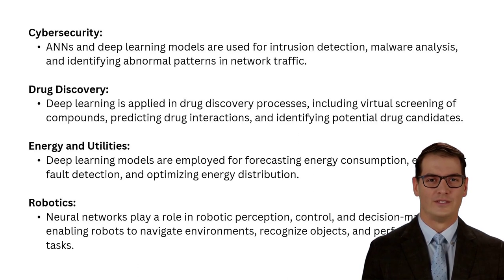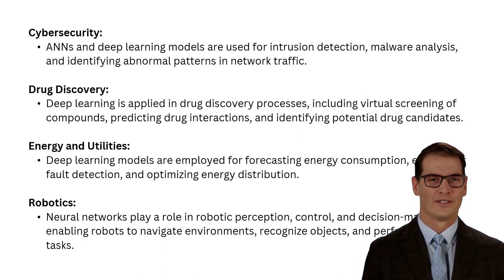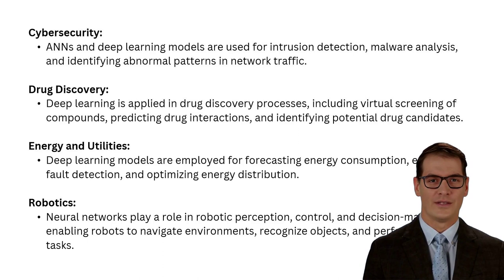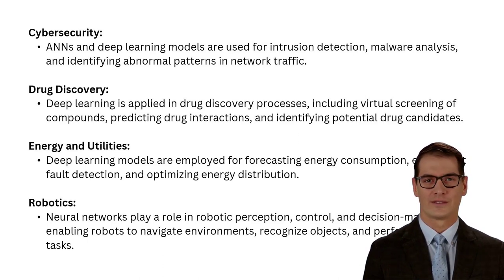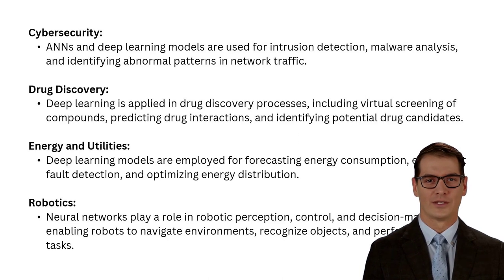Energy and utilities companies make use of deep learning tools to foresee energy consumption, find equipment faults, and optimize energy distribution. Lastly, neural networks are applied in robotics to allow robots to move around different environments, acknowledge objects, and carry out complicated undertakings.